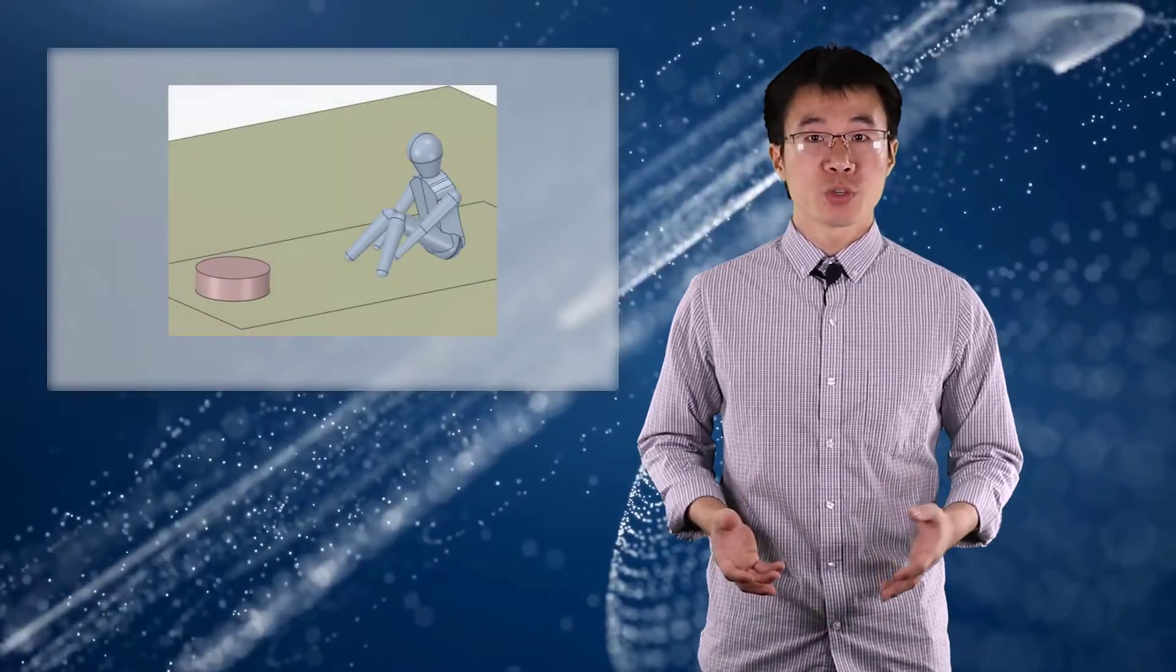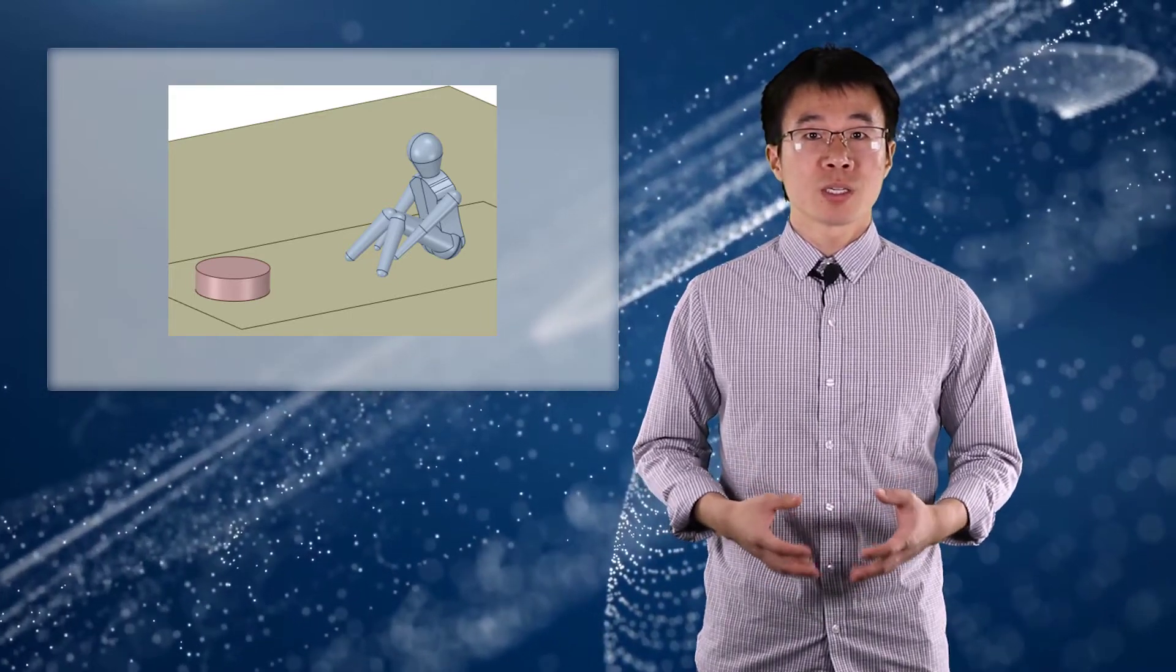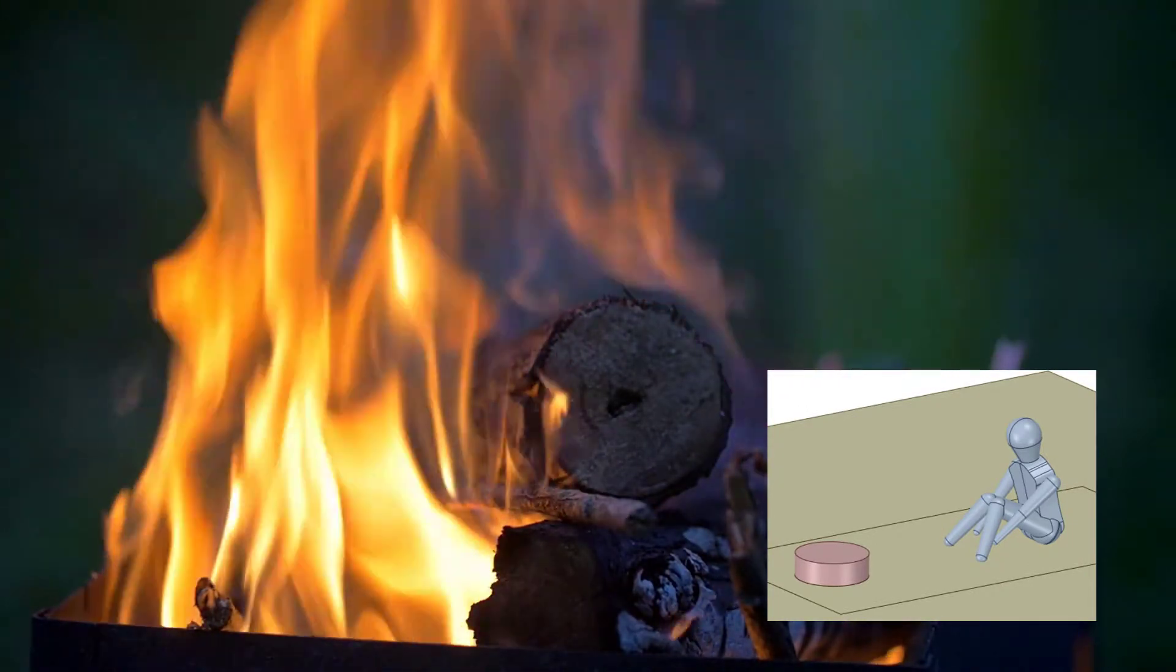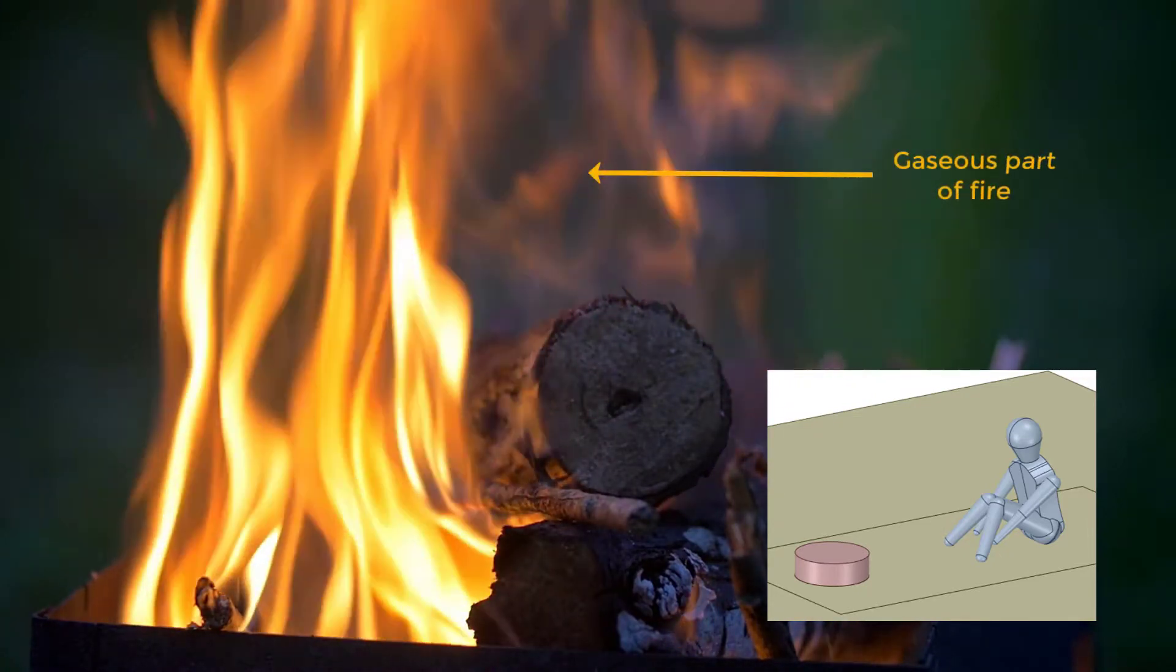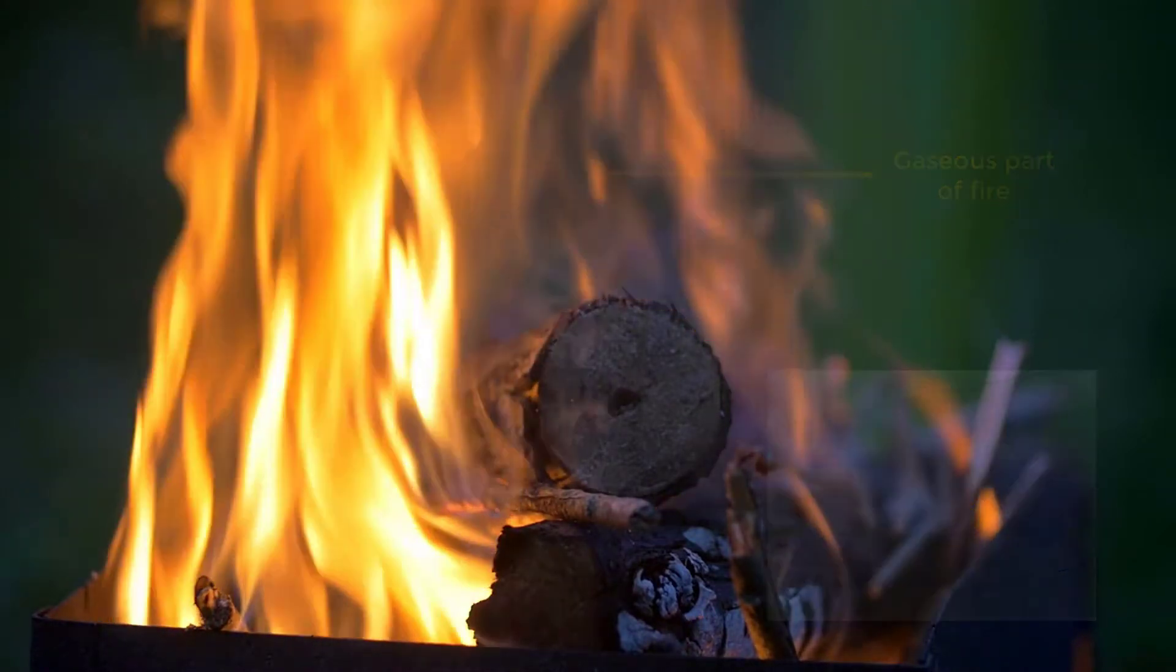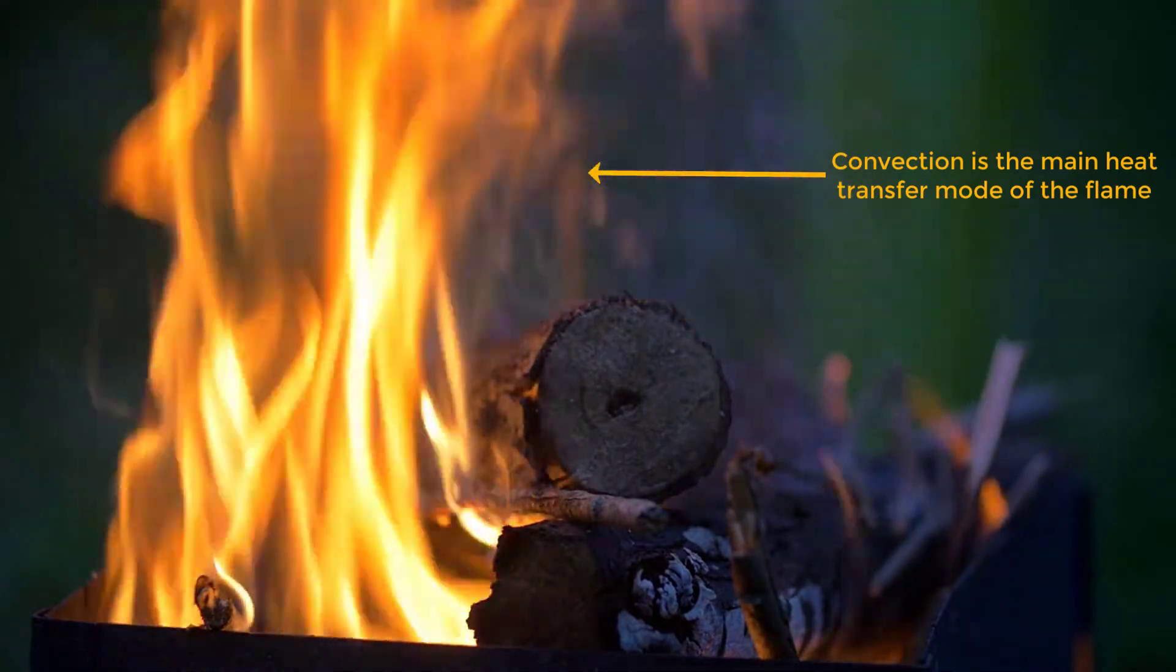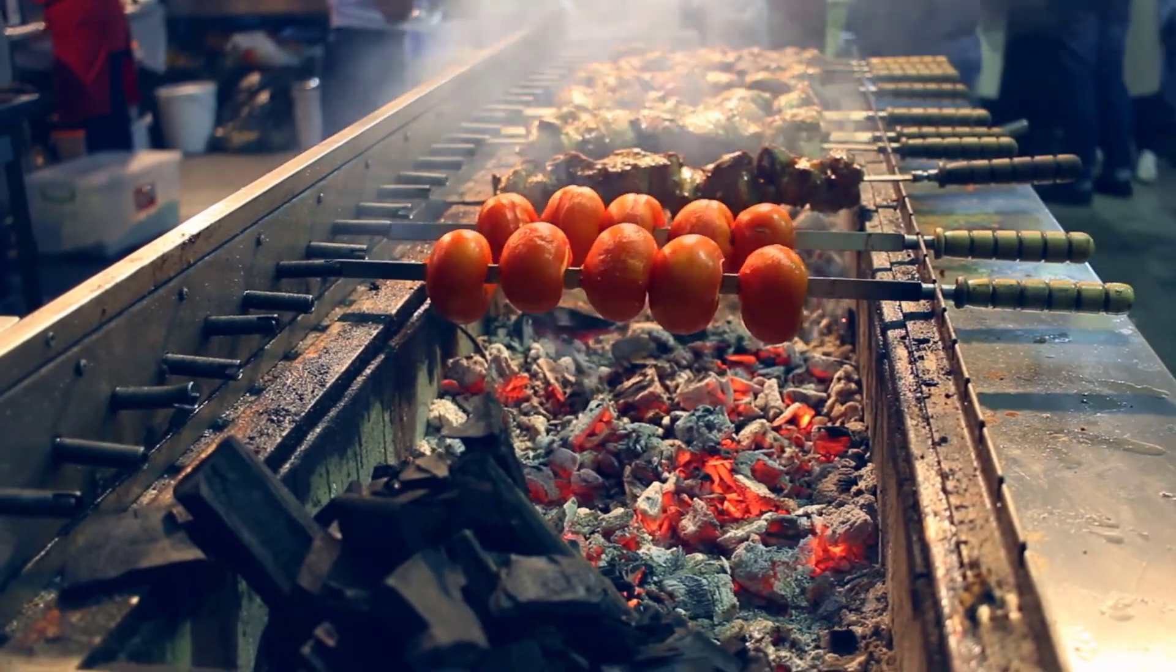The first step of simulating campfire radiation is to create the geometry. First, we spend some time creating this human geometry. It's a person in a seated position on the ground. Then we use a cylinder to represent the burning wood. Notice that although the flames can be very high, we neglect it from the geometry and only leave the wood. This is because the flame is the gaseous part of the fire, so it's in essence gas, which has a negligible emissivity. And the main heat transfer mode of the flame should be convection. And that's also why when we want to heat something up quickly using fire, we want to put that object above the heat instead of next to it.